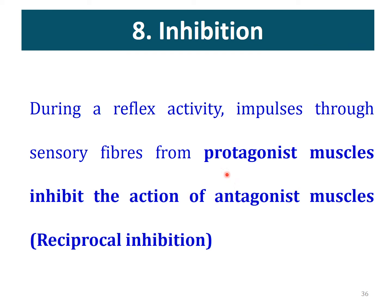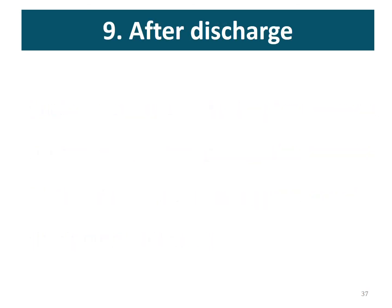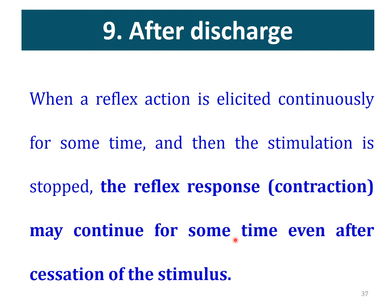Seventh is facilitation — the response becomes progressively higher for the first few occasions when we apply multiple stimuli in successive periods, because of the beneficial effect of one stimulus on the next. Eighth is inhibition — specifically reciprocal inhibition. When the agonist muscle contracts, at the same time the antagonist muscle is inhibited. For example, during flexion or extension of the knee or elbow, the agonist muscle is stimulated while the antagonist muscle is inhibited simultaneously, to achieve the desired action in the limb.